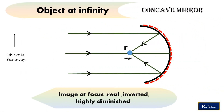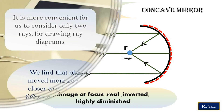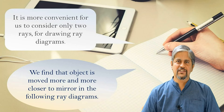Let us now start with the ray diagrams in a concave mirror for different positions of the object. In this case, the object is at infinity, meaning far away. The light rays coming from the object are parallel to the principal axis. After reflection, the light rays meet at the focus, where a real and point-sized image is formed. The size, location, and nature of image depend on the position of the object.